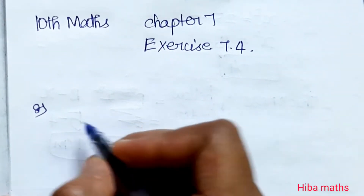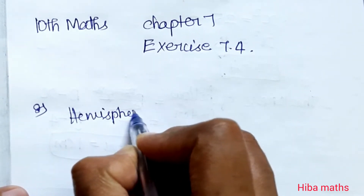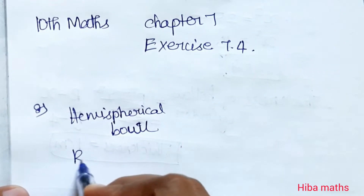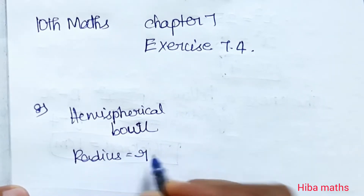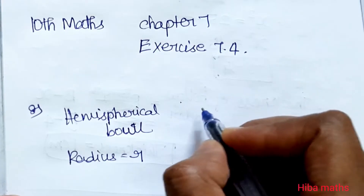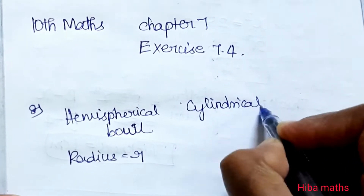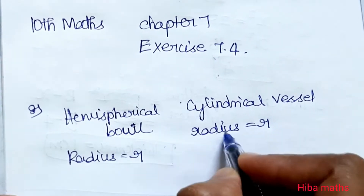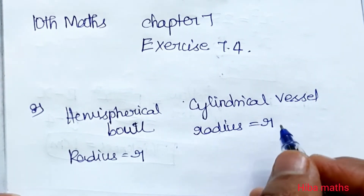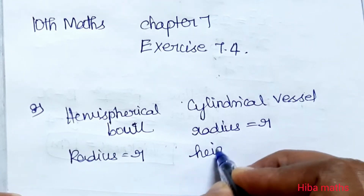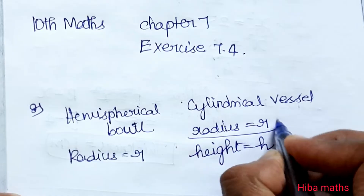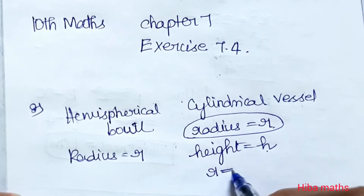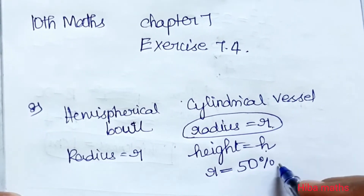Solution: For the hemispherical bowl, we note the radius. For the cylindrical vessel, the radius and diameter are the same as the bowl. The problem states that the radius of the cylinder is 50% more than its height.